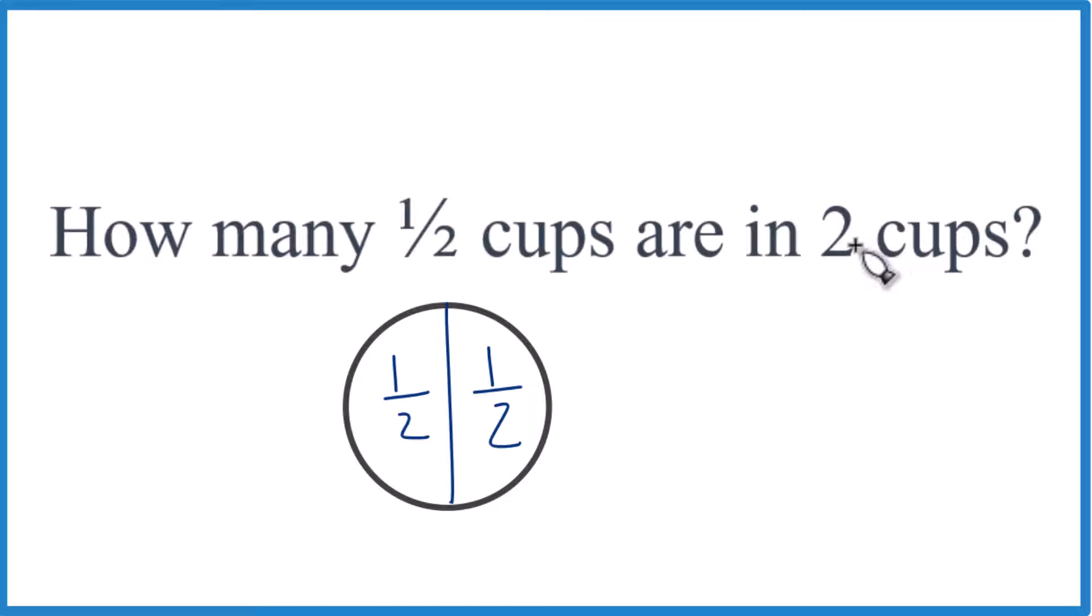If we have two cups, we have two times two, and we end up with four one-half measures in two cups. So that's kind of a visual way to think about it.